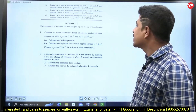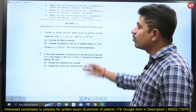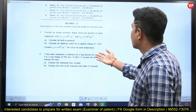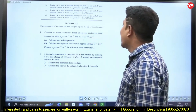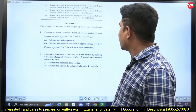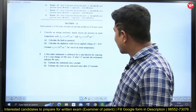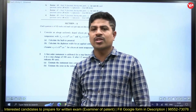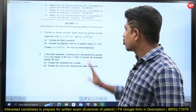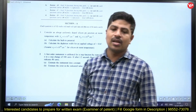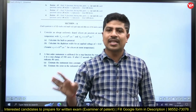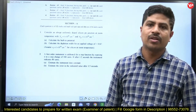The first question is about electronics — specifically the ADC part. Consider an abrupt uniformly doped silicon PN junction at room temperature with NI equal to 1×10¹⁶ per centimeter cube. This question is from ADC. It's a numerical question. A very good textbook for analog electronics and ADC is Sedra Smith.